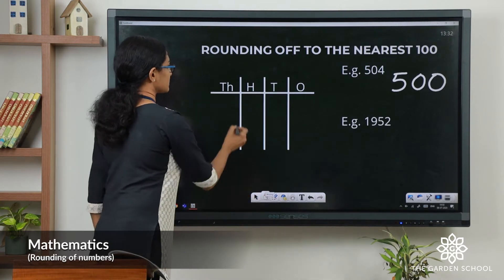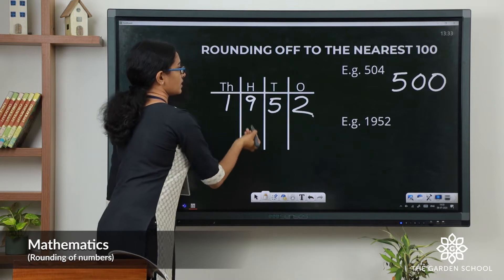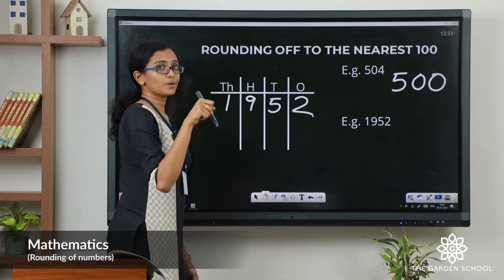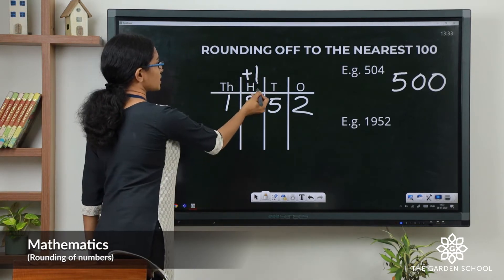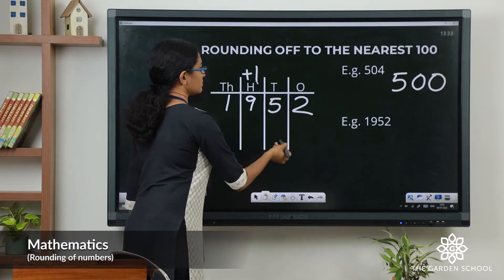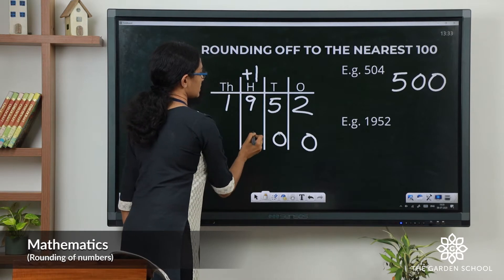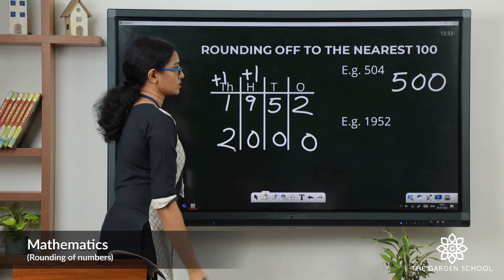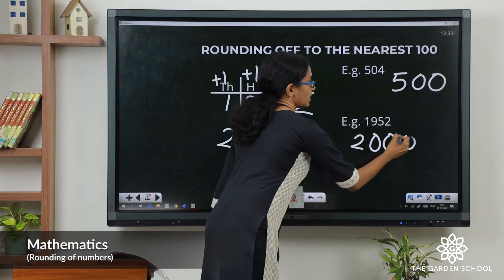In the next case, the digit in the tens place is 5. So we have to add 1 to the hundreds digit and change the tens and ones place to 0. So 9 plus 1 is 10, carrying forward 1 here makes it 2000. So this number rounded off to the nearest hundred gives 2000.